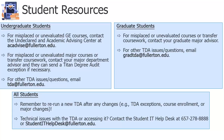On this screen is information about student resources. Undergraduate students: for misplaced or unevaluated GE courses, contact the Undeclared and Academic Advising Center at acadvise@fullerton.edu or visit their website linked in the notes for this video. For misplaced or unevaluated major courses or transfer coursework, contact the major department advisor, who can send a Titan Degree Audit exception if necessary. For other issues or questions, contact the Titan Degree Audit office at tda@fullerton.edu. Graduate and post-baccalaureate students: for misplaced or unevaluated courses or transfer coursework, contact your graduate major advisor. For any other TDA questions or issues, contact gradtda@fullerton.edu.